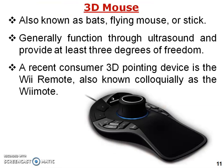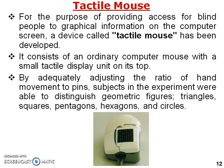3D mouse, also known as a bat, flying mouse, or wand, generally functions through ultrasound and provides at least three degrees of freedom. Ultrasound technology is used to move the cursor on screen. A recent consumer 3D pointer device is the Wii Remote, also known colloquially as the Wiimote.